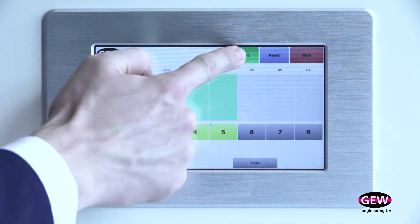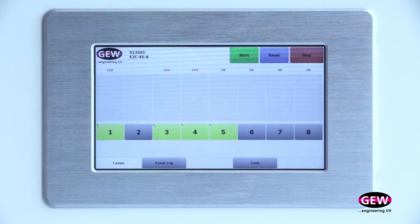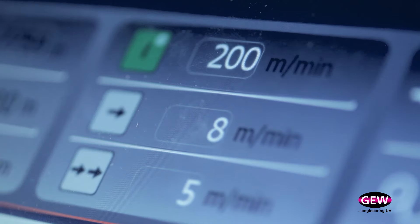With UV LEDs, there is no burn-in time. The lamp is ready immediately. When the press starts, the LED's power increases from zero in line with the machine's speed.